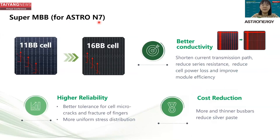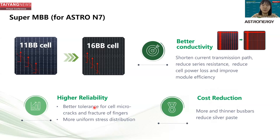For our Astra N7 utility-scale product, we adopt super multi-busbar. By having more busbars, we improve conductivity through shorter current transmission paths and reduced series resistance. We improve reliability by increasing tolerance for cell macro cracks and fracture of fingers, and more busbars provide more uniform stress distribution. Importantly, super multi-busbar can also reduce cell cost by reducing silver paste consumption.